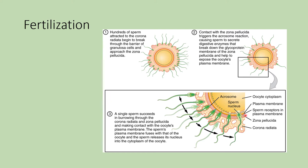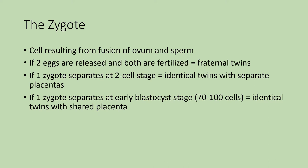As soon as one sperm finally fuses and reaches that membrane, the nucleus is brought into the oocyte, and then any additional sperm will be prevented from fusing and fertilizing. As you can see from the picture, the first sperm that reaches the oocyte is not necessarily the one that fertilizes it — it's definitely a group effort. If there's a low sperm count, that decreases the chances of fertilization. You need high numbers of sperm to allow them to penetrate those outer layers so one can ultimately fertilize the oocyte.